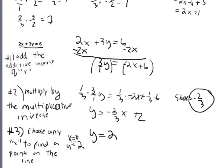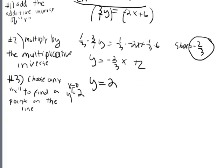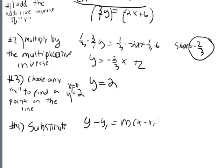Now we have the slope and our x1 and y1. The last step is simply to substitute these values into point slope form — into the general point slope equation. The general form is y minus y1 equals m times x minus x1, so: y minus 2 equals negative 2/3 times x minus 0. Choosing x equals 0 makes it so easy at this step because y1 is just the constant term. Let's recap the steps and then practice a few problems.